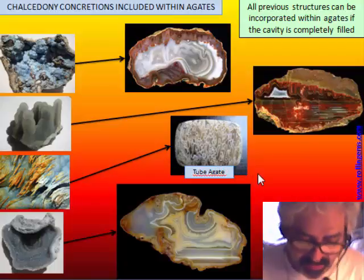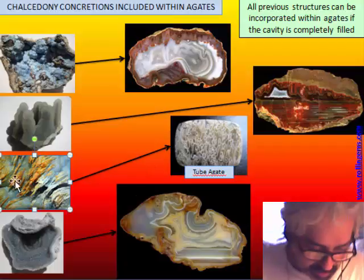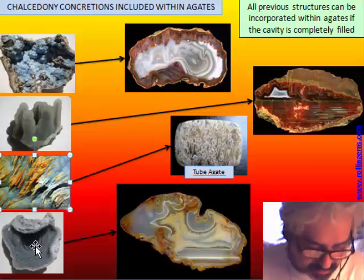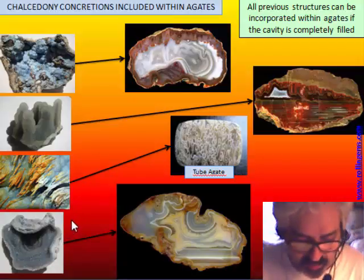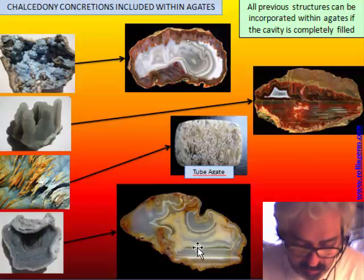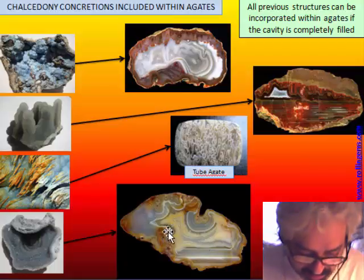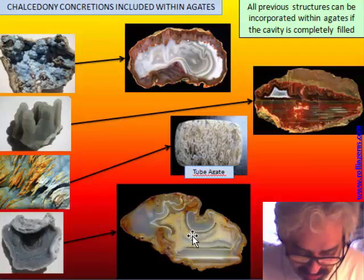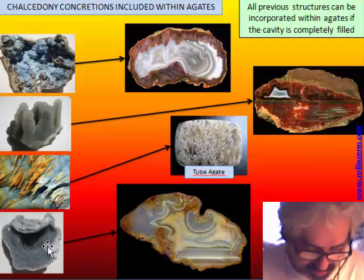There is a kind of agate called tubagate, which is the corresponding material when we have many branches of chalcedony — like elongated stalactites — that are filled in by other chalcedony or banded agate, staying frozen inside the nodules. Also, the flower of chalcedony stuck on one side of a cavity wall can be included in a completely filled agate as a portion of different color, as we can see in this sample: a gray chalcedony with a sheet of crystal quartz on top.